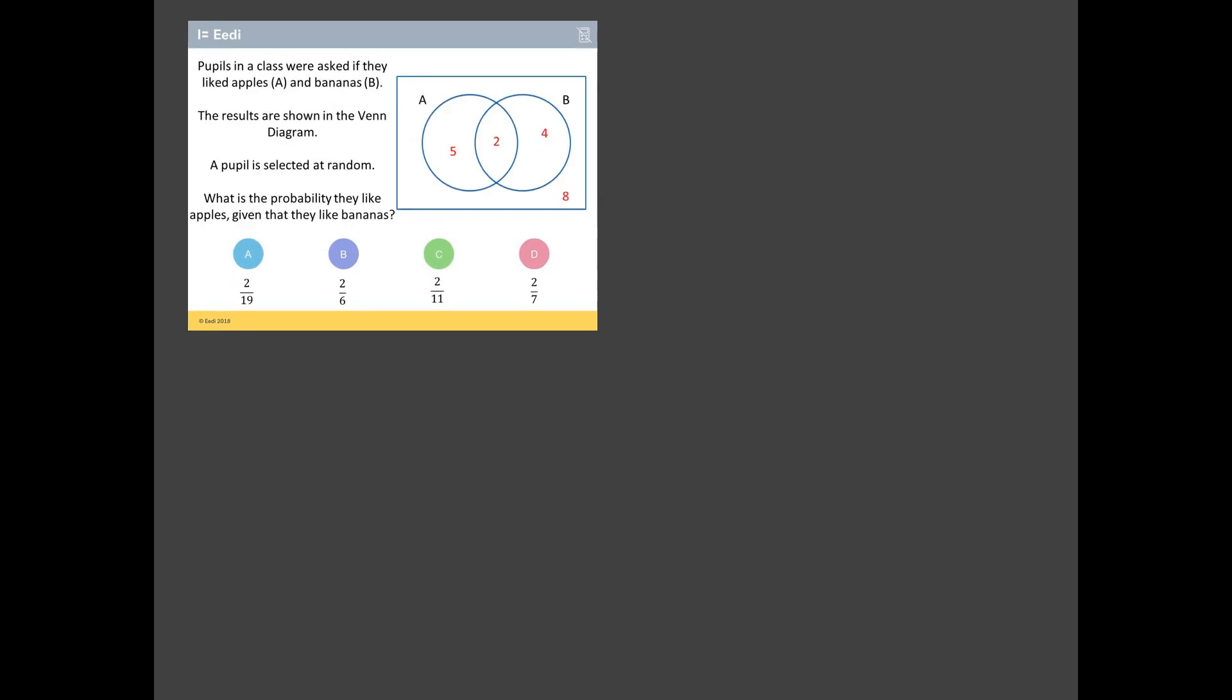Let's press on with the second least worst answered question, and it is this one on Venn diagrams. Pupils in a class were asked if they like apples and bananas. The results are shown in the Venn diagram. A pupil is selected at random. What is the probability they like apples given that they like bananas? That is the key to this: this 'given that.' We know they like bananas. In other words, we know that they live in this banana circle here. Forget about these five because they don't like bananas. They can't be these eight - they don't like bananas. It's got to be chosen from this banana circle, so it's either these two or these four.